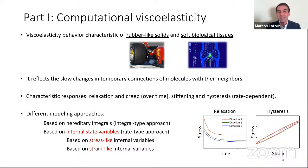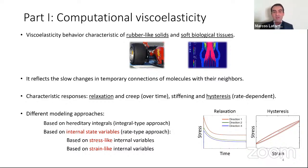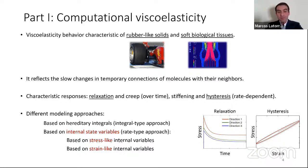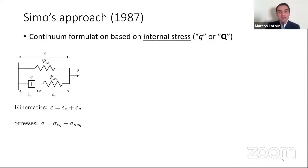Characteristic responses are relaxation of stresses, creep strains over time, stiffening, and hysteresis that are rate-dependent. In this part of the presentation, I will revisit a couple of formulations and explain how I could extend them. In chapter 10 of Computational Inelasticity, there is a summary of one formulation that Simó previously published in 1987. This formulation is based on internal stresses Q, motivated from the standard viscoelastic solid with two branches: a Hookean branch with a spring, and a Maxwell branch with a spring and a dashpot.